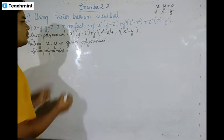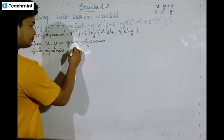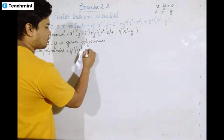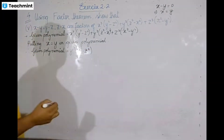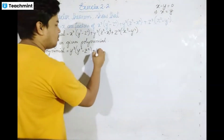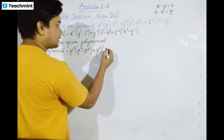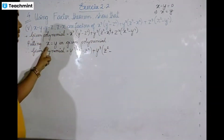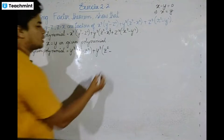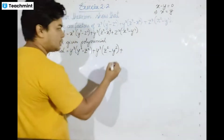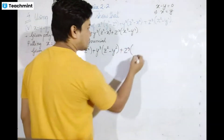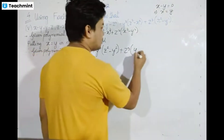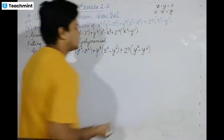We substitute x equal to y in the given polynomial: y cubed times (y squared minus z squared), plus y cubed times (z squared minus y squared), plus z cubed times (y squared minus y squared).